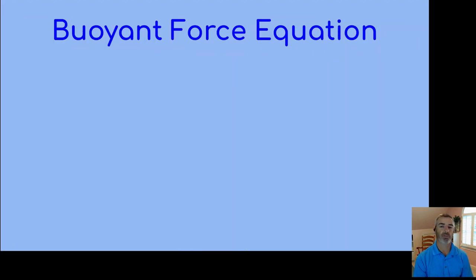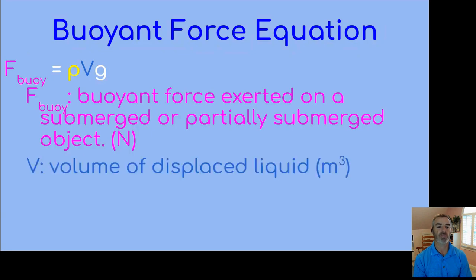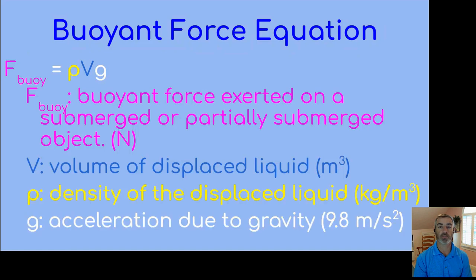Let's look further into the buoyant force equation. The buoyant force equals rho times V times g. The buoyant force exerted on the submerged or partially submerged object is measured in newtons. The volume of the displaced liquid is in meters cubed. The density of the displaced liquid is in kilograms per meters cubed. And g is the acceleration due to gravity, 9.8 meters per second squared.